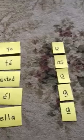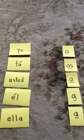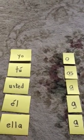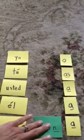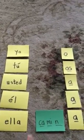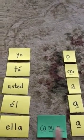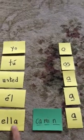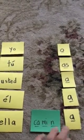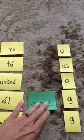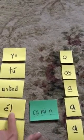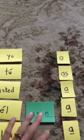Let's try another one. I'm going to find my other green card. So the base now is camina, which means walks. Ella camina — she walks. Let's move to él — that's he. Él camina, he walks.